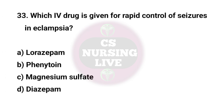Question No. 33. Which IV drug is given for rapid control of seizure in eclampsia? Right answer is C. Magnesium sulfate.